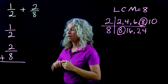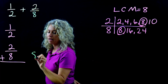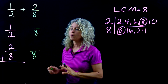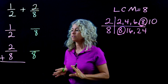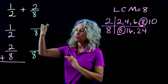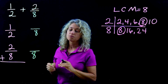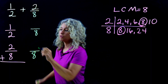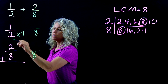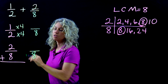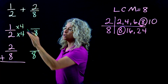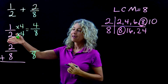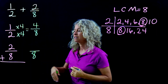Now I have a new denominator — I can use 8 as the denominator for both fractions. In this step we're showing how to make equivalent fractions. Starting with the top fraction: how do you get from a 2 to an 8? You multiply by 4. Whatever you do to the bottom, do the same to the top. So 1 times 4 is 4.